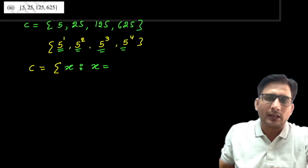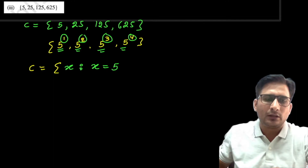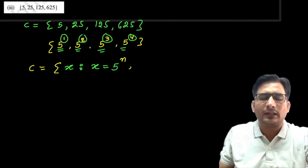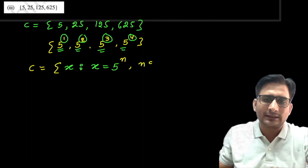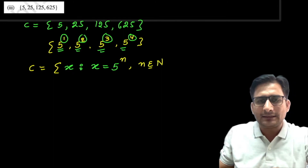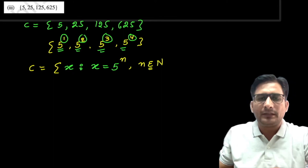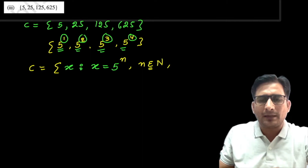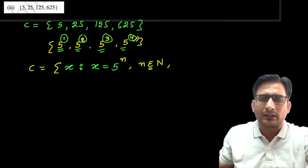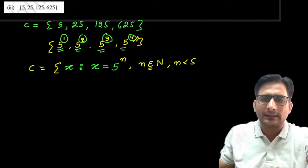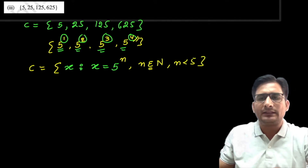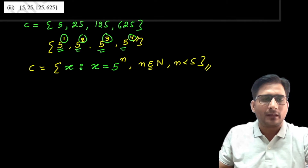The changing exponent 1, 2, 3, 4 represents natural numbers, so n ∈ ℕ. As discussed in the previous class, natural numbers are denoted by capital N, and the symbol ∈ means 'belongs to.' Since n goes up to 4, we write n ≤ 4, or equivalently n < 5. So the answer is {x ; x = 5ⁿ, n ∈ ℕ, n < 5}.